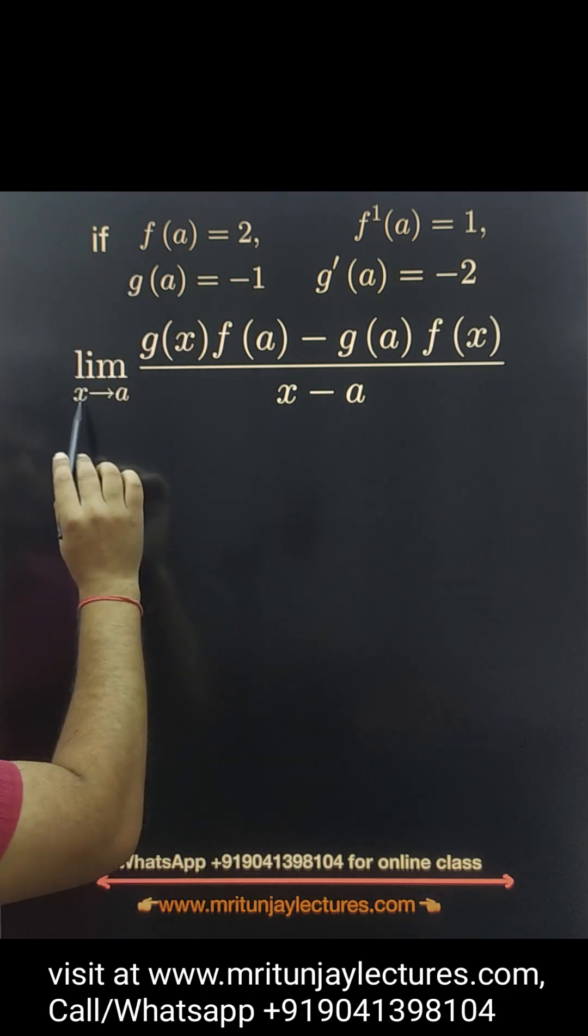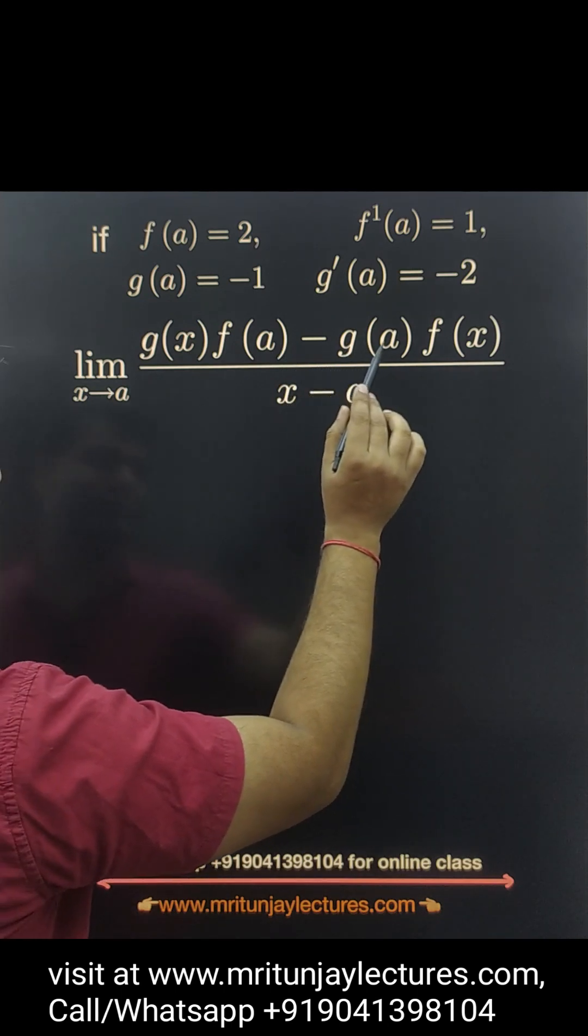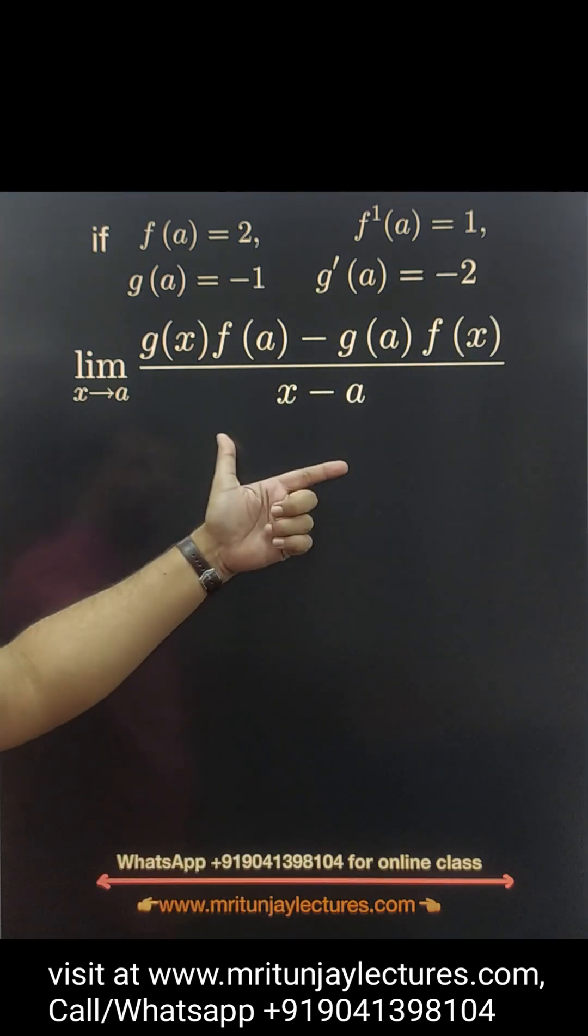Our motive: determine limit as x tends to a of g(x) times f(a) minus g(a) times f(x) upon x minus a. How can we solve this type of problem?